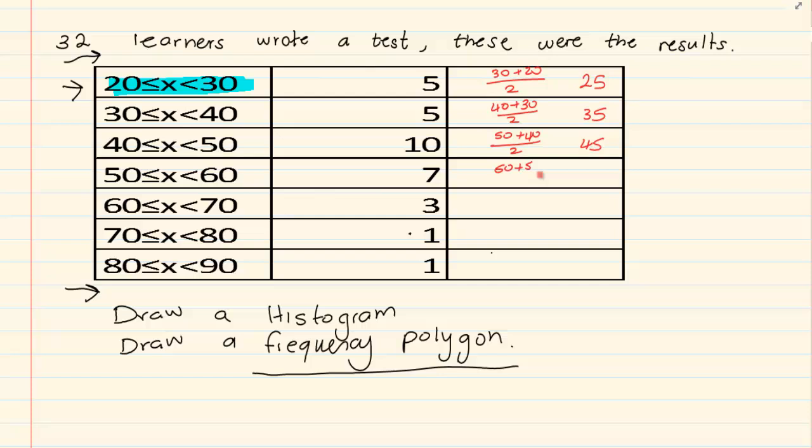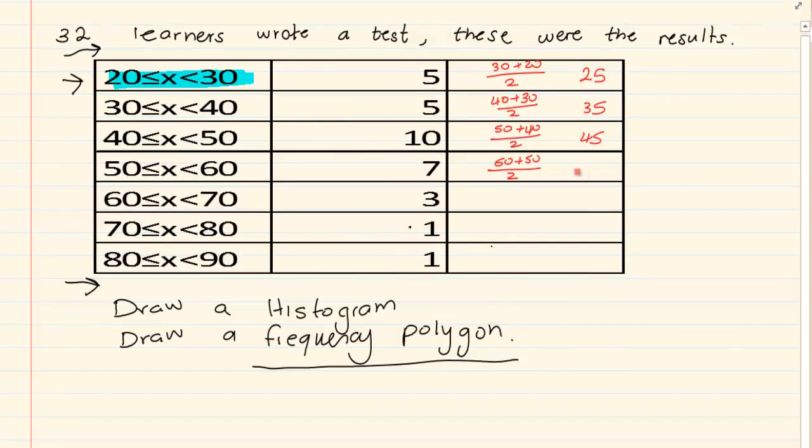60 plus 50 gives us 55. 60 plus 70, then we got 70 plus 80, and 80 plus 90.